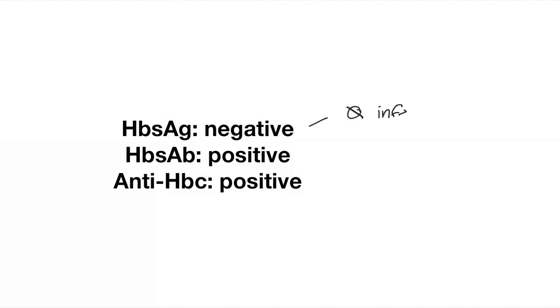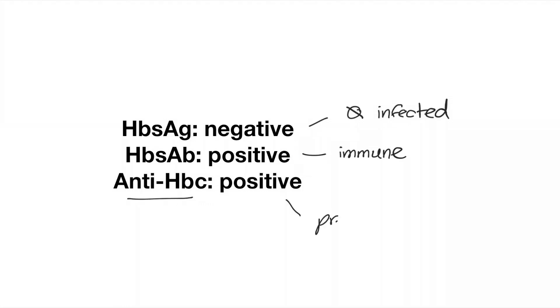In this second set of labs, the surface antigen is negative, indicating the person is not currently infected. The surface antibody is positive, meaning the person is immune, but we need to look at the core antibody to determine if this was due to vaccination or prior exposure. The core antibody is positive, which indicates that this person previously had hepatitis B and has now recovered.